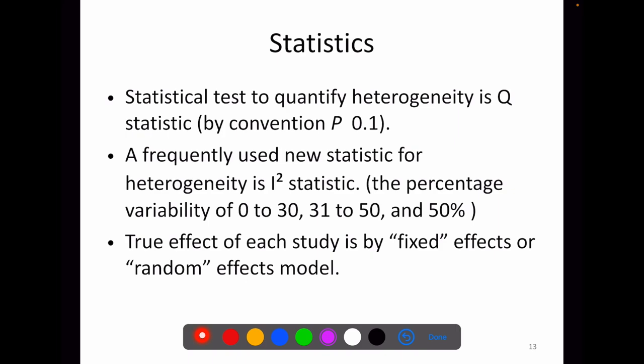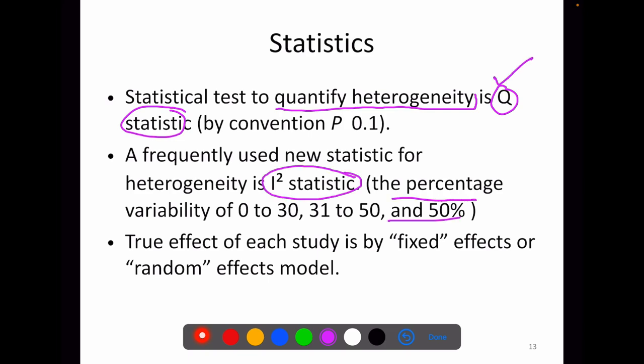We move on to the statistics involved in conducting a meta-analysis. We need a test for heterogeneity because we are dealing with different articles that may differ due to differences in sample size, study design, treatment protocols, patient follow-up, statistical analysis, reporting, and patient response. We have statistical tests to quantify heterogeneity, expressed as Q statistic. If the studies being clubbed are too heterogeneous, we cannot pool the study results. Q statistic is similar in concept to a chi-square test, and by convention a p-value of 0.1 is often taken to indicate no substantial differences between the studies.